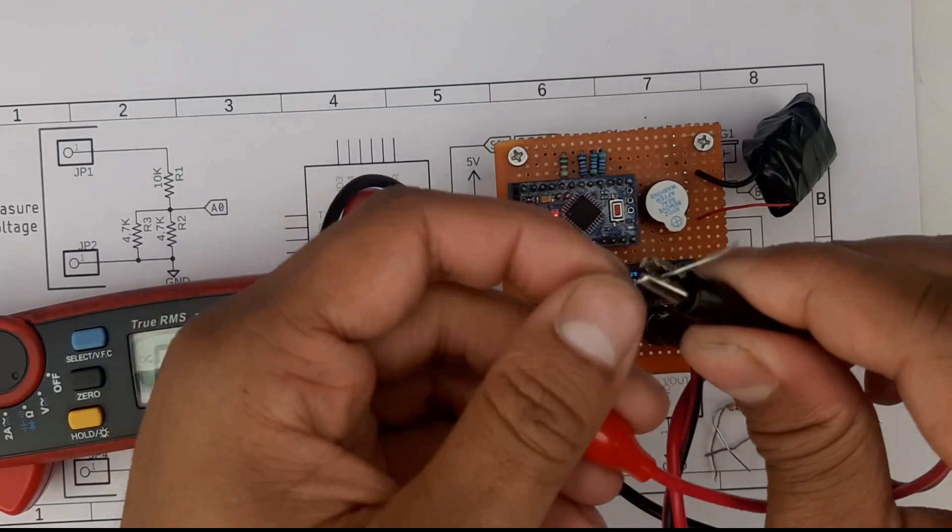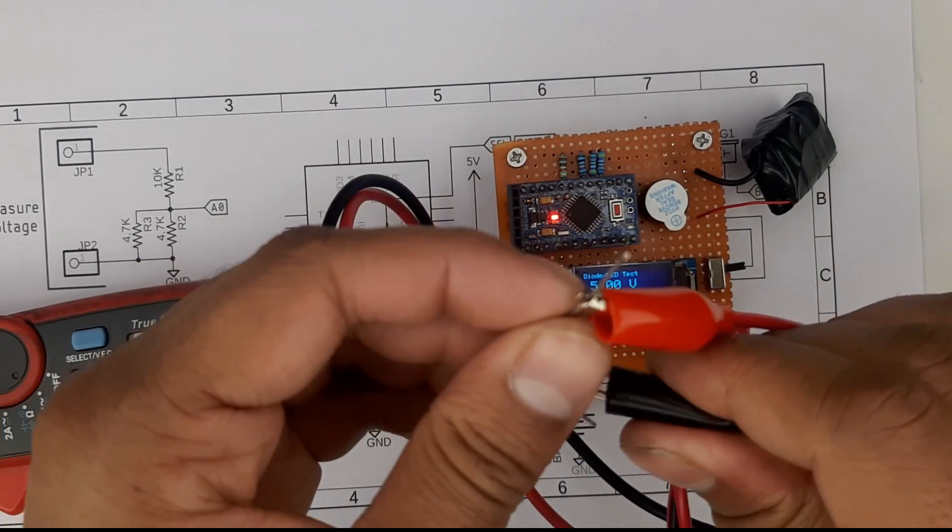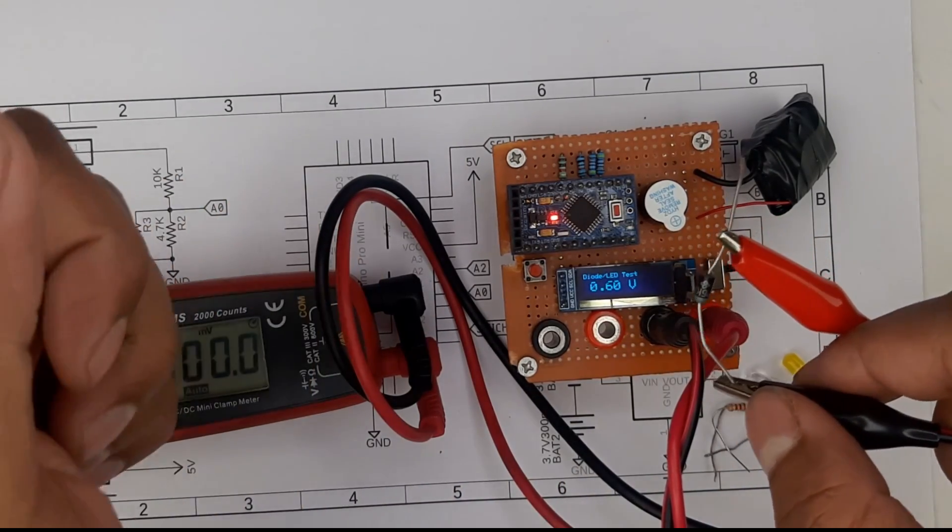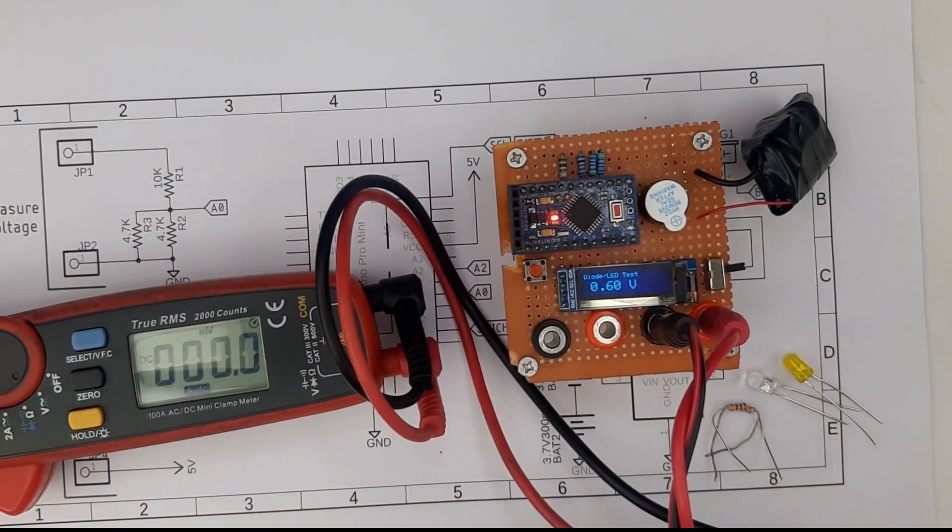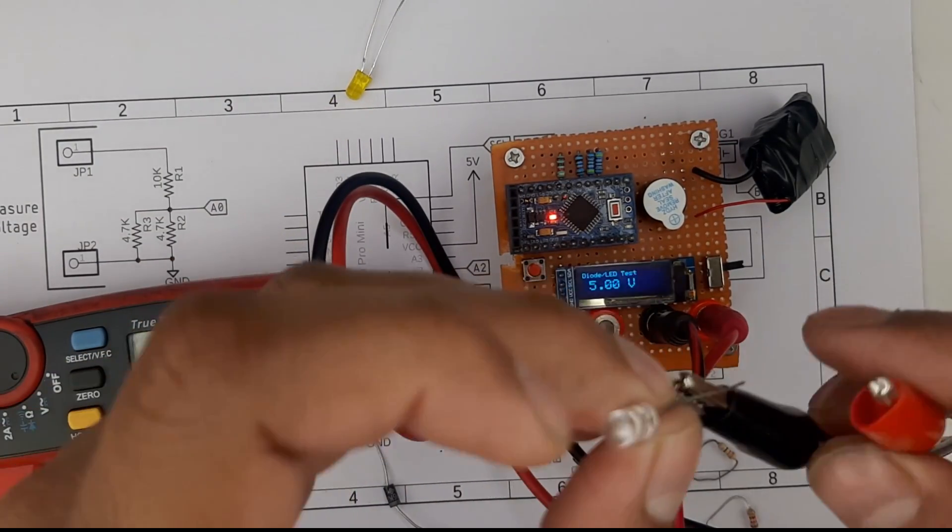If I connect a diode over here you can see the voltage drop of the diode. It's measuring very accurately. Now if I connect LEDs it will show you the voltage drop across the diode.